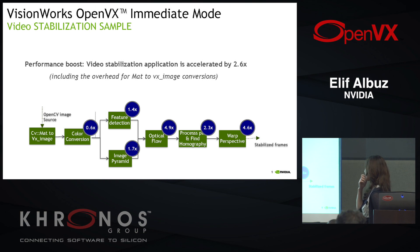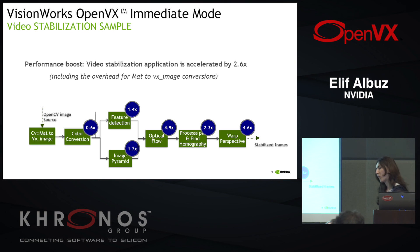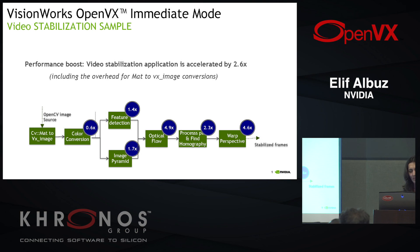Most of this pipeline is running on GPU, except for process points and find homography, which have a small CPU section. The data is read directly by the GPU in GPU memory — the source goes directly to GPU memory, and in this particular case we handle it entirely at the GPU level.